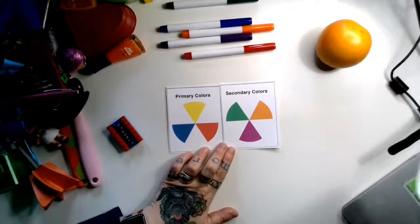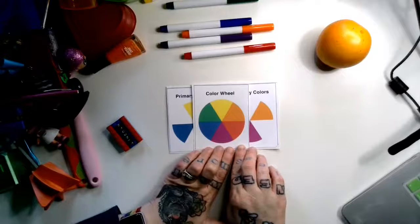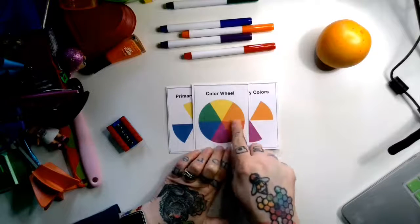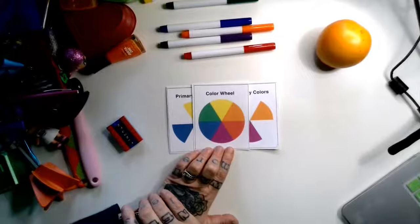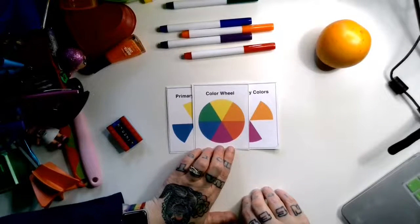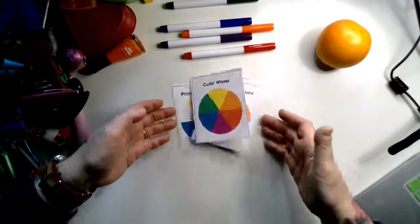And together those colors create the color wheel, which kind of looks almost like a rainbow, but in a circle. So what we're going to do today is you guys are going to make a color wheel out of things that you find around the house.